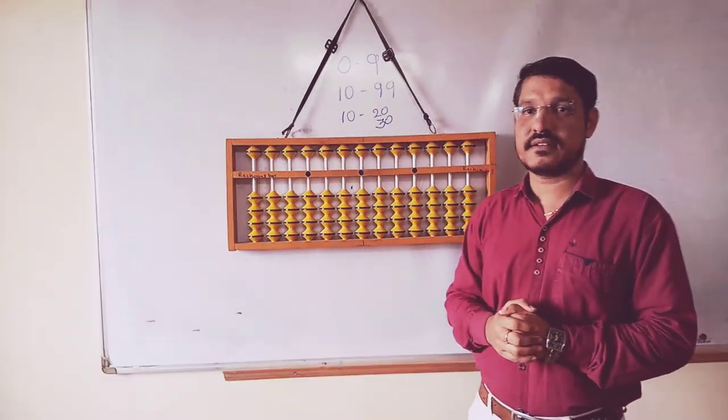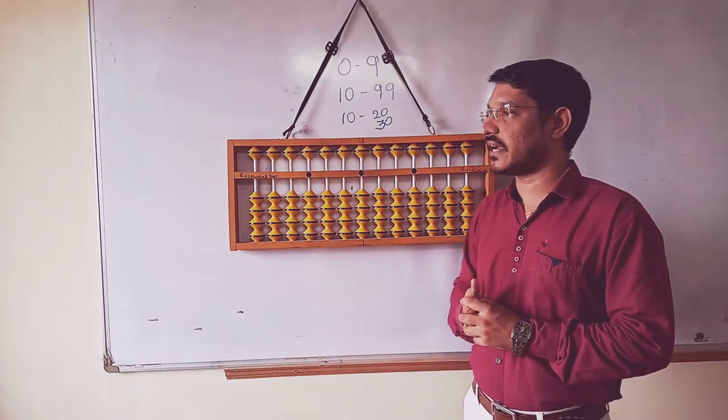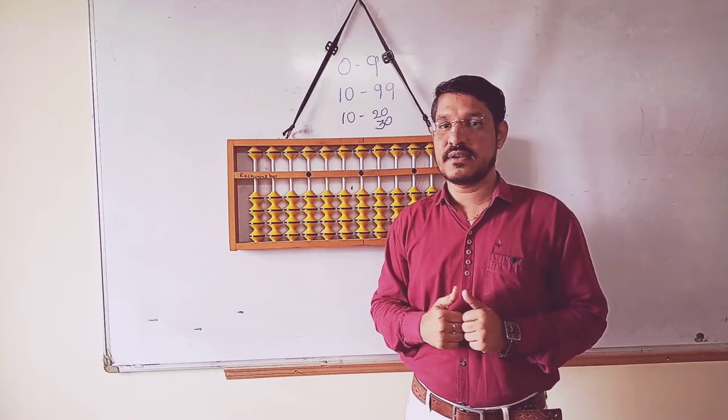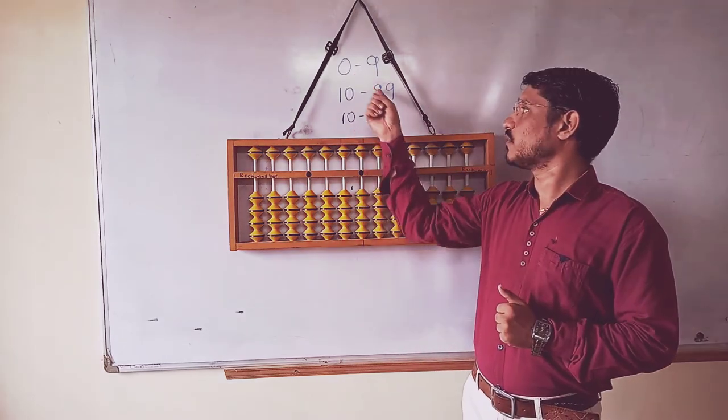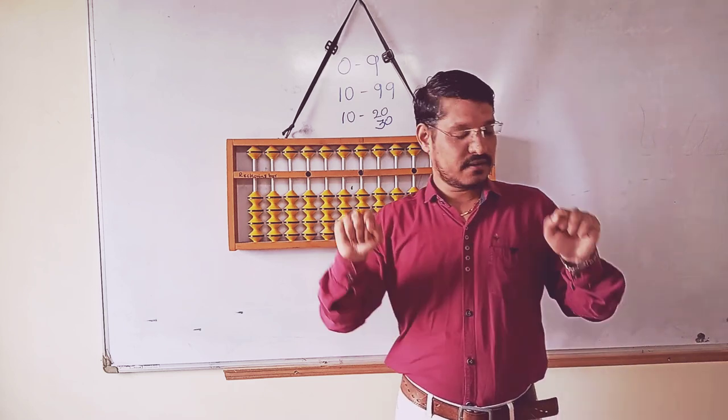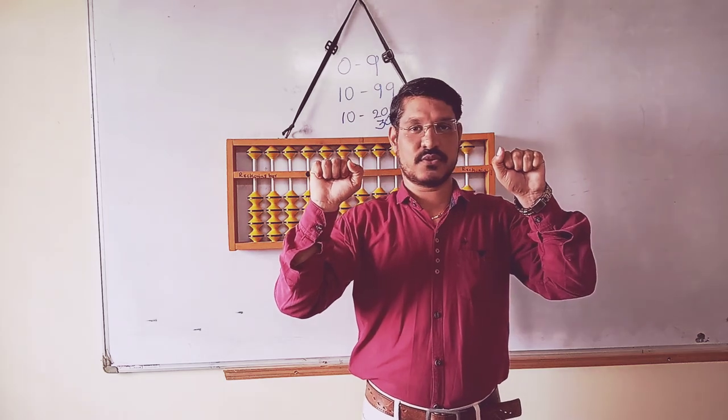But next, we don't know. Somebody doesn't know that directly we are going to 5 like this. But in Abacus language, we don't have like this. For 5 value, we have considered only the thumb finger. It is the indication of 5. If you open only one thumb finger, that is the value of 5.